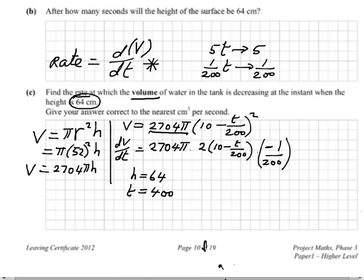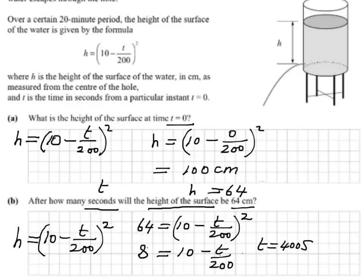This gives us another important technique: very often the answer to a previous part is used in the next part. That means it's a very good idea to summarise the answer you get for each part of a question, because that often makes it much clearer what the next step is. Here, when the height was 64, we had already worked out that the time was 400 seconds.